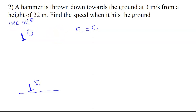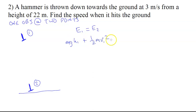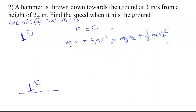In general, if you see one object at two points, that's the direction you want to head. Conservation of energy: mgh₁ + ½mv₁² equals mgh₂ + ½mv₂². The mass appears in every term, so I can factor it out and cancel it on both sides.